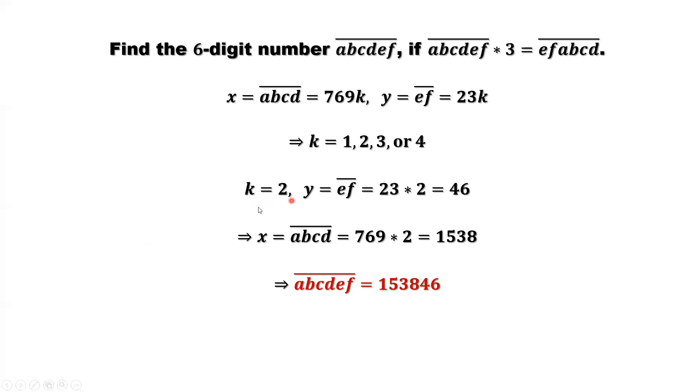Let's check K equals 3. Replace K by 3. We find ef equals 69. Replace K by 3. We find X equals abcd equals 769 times 3 equals 2307. We find the second solution. Put those 6 numbers together. 230769 is the second solution.